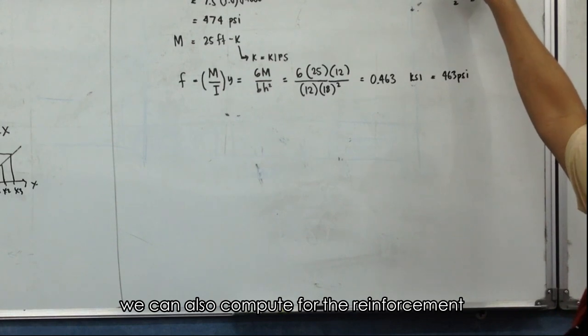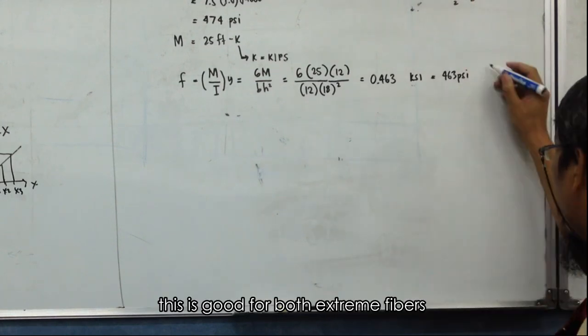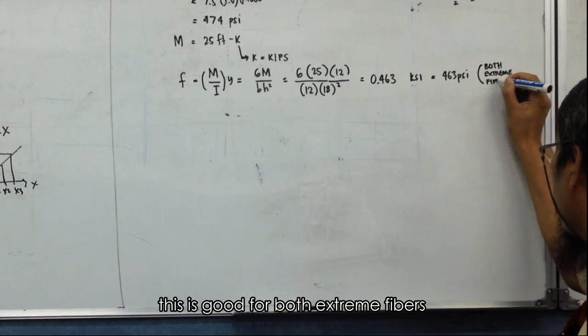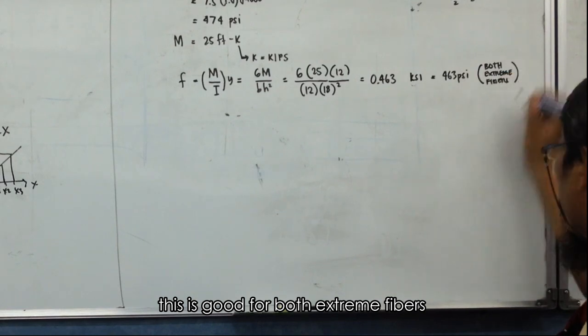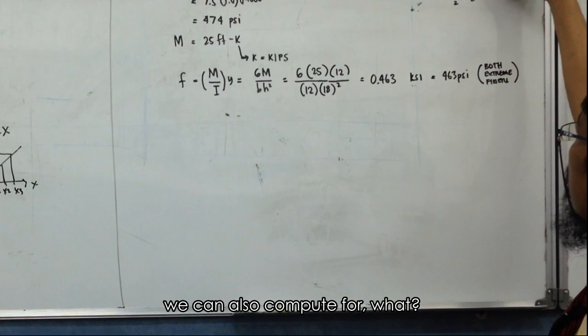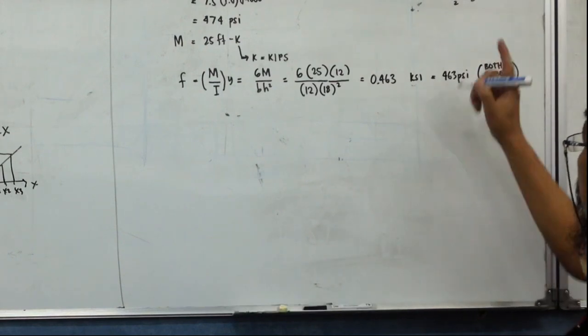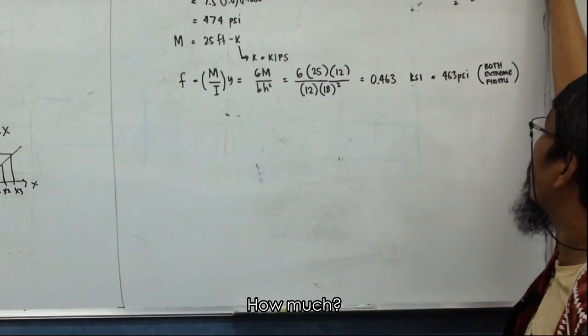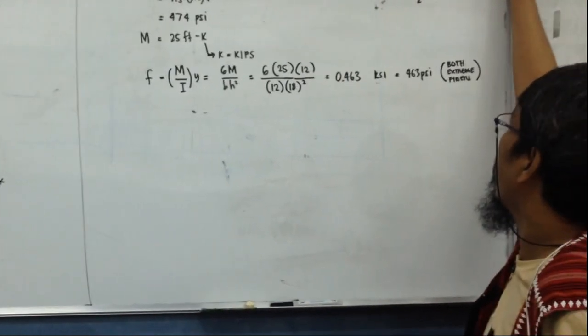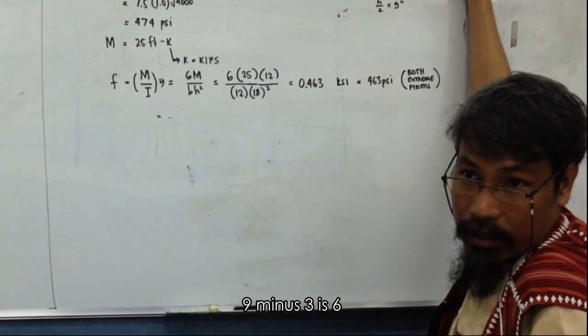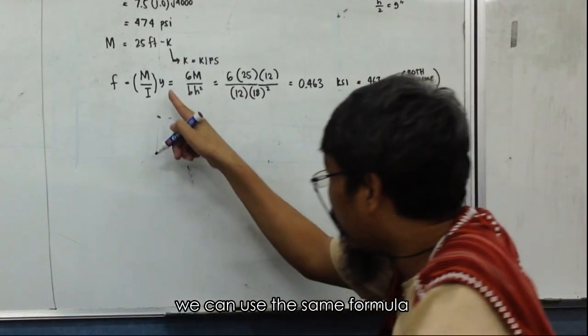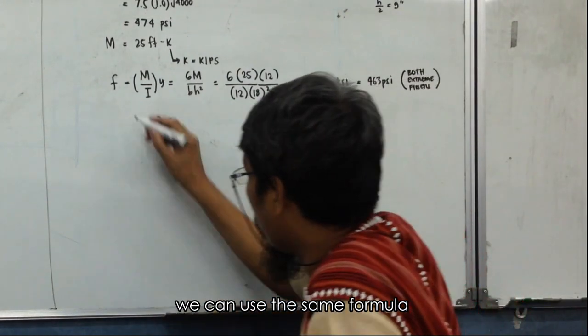Both have the same because we have neutral axis at the center. We can also compute it for the reinforcement. This is good for both extreme fibers. We can also compute for one, from the center to this point. How much? Nine minus three is six, this is six inches.